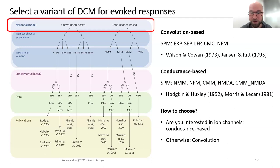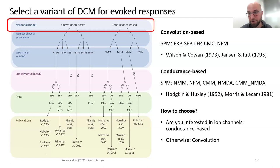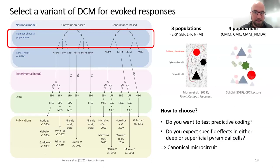How do you choose between convolution-based and conductance-based DCM? Simply: if you're interested in ion channels, use conductance-based. Otherwise, I strongly suggest convolution-based DCM because it tends to be better behaved and more robust. Go with the simpler model unless you need a more complex one to answer your question.